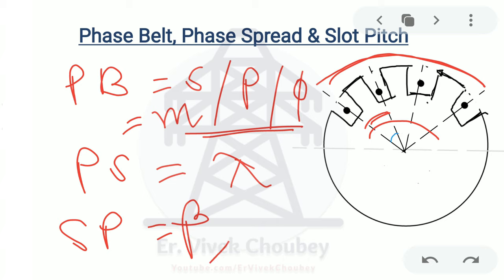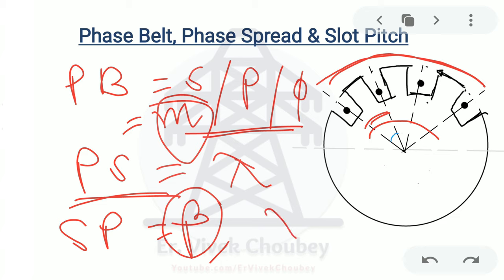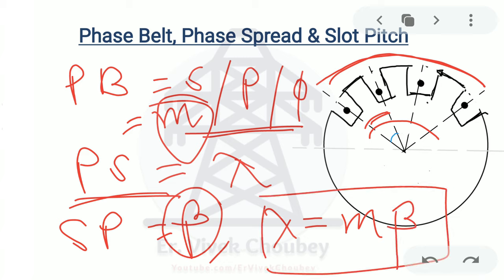What is the relation between phase belt, phase spread, and slot pitch? Each pole has m number of slots; the angle between two slots is beta. So the total angle across all slots is called phase spread. Therefore, phase spread equals phase belt times slot pitch: lambda = m × beta. If we know the angle between two slots and how many slots there are, we can find the total angle, which is the phase spread.